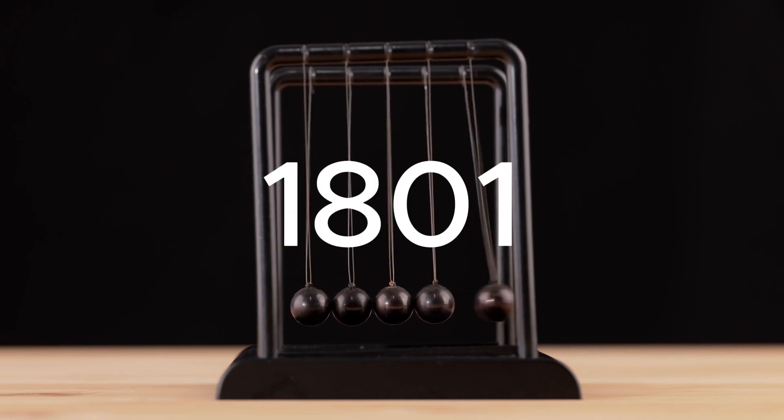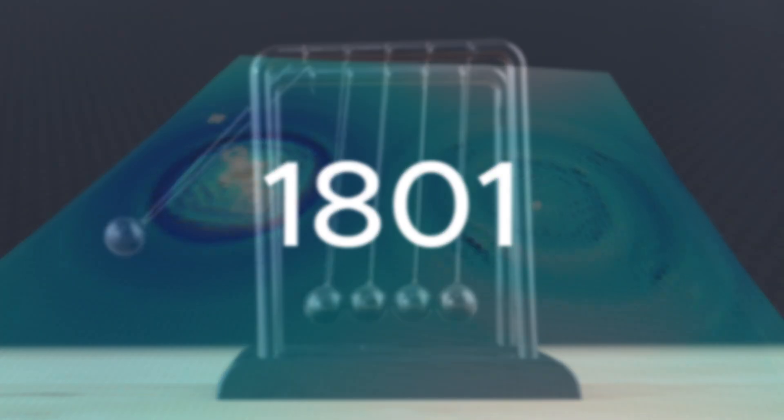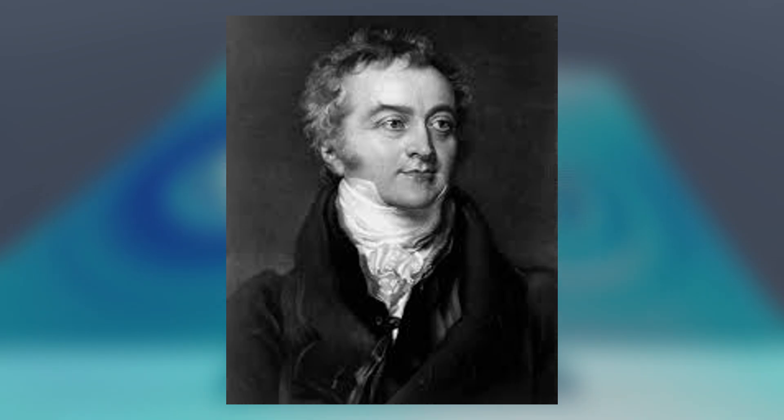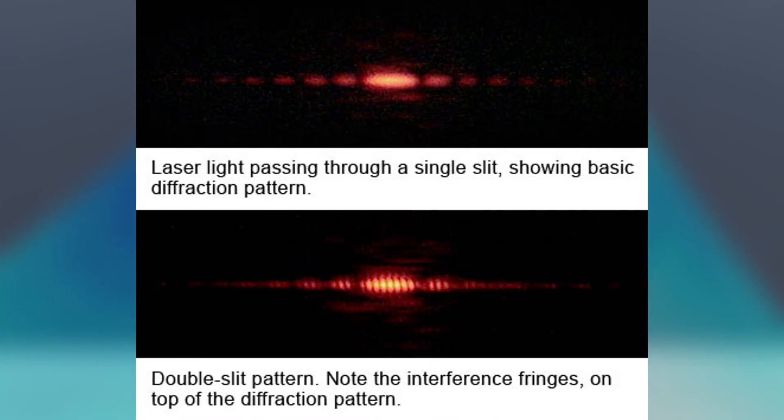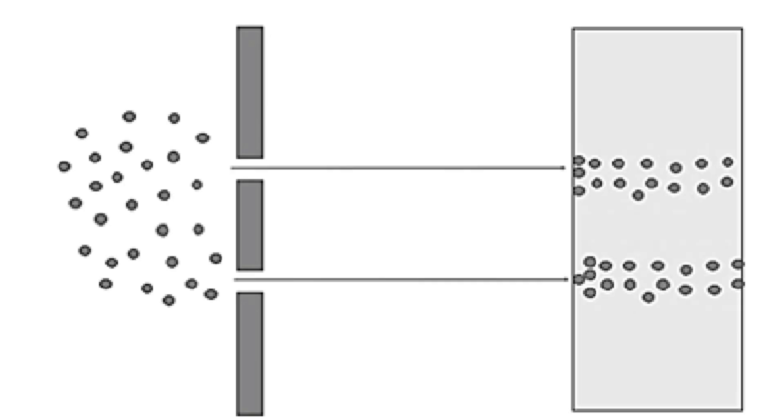Then, in 1801, a simple experiment changed everything. Thomas Young shined a light through two narrow slits, and what he saw shocked everyone. Instead of two bright lines, he saw a pattern of light and dark bands. Interference, something only waves could do.